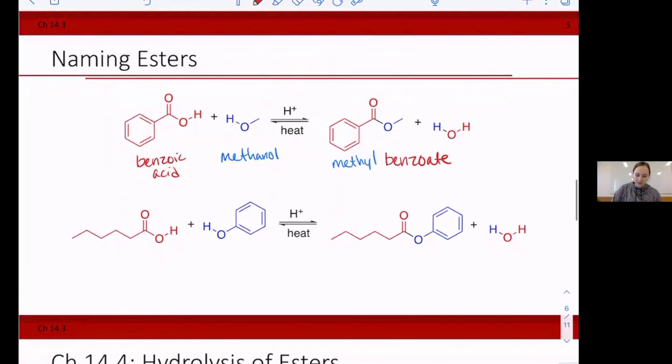Okay. Let's do another one. We have one, two, three, four, five, six carbons here. So we're going to have hexanoic acid. And then our alcohol is phenol.